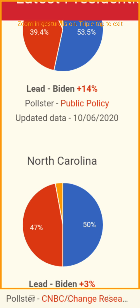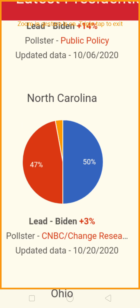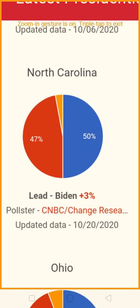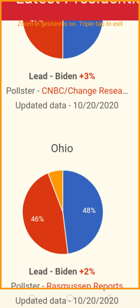North Carolina is a critical state. So far, Joe Biden is winning 50% to 47% — a nice lead, but not a great lead. Ohio: Biden is winning by 2% in Ohio. No Republican has ever won the White House without taking Ohio. It's 48 to 46% for Joe Biden.